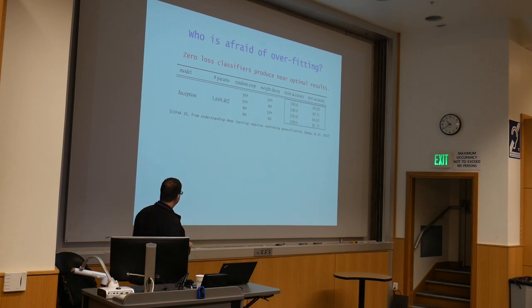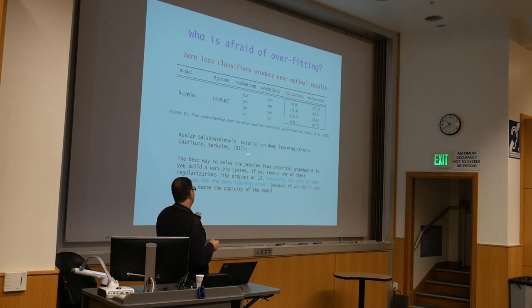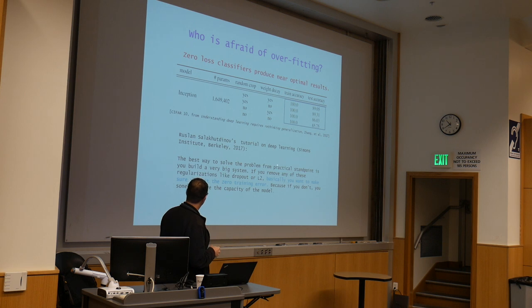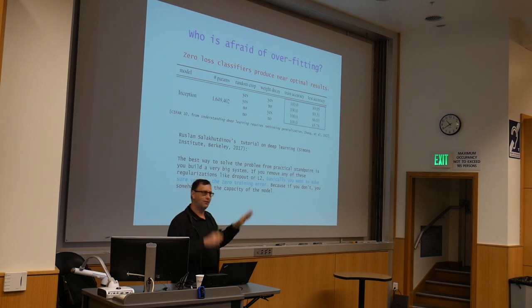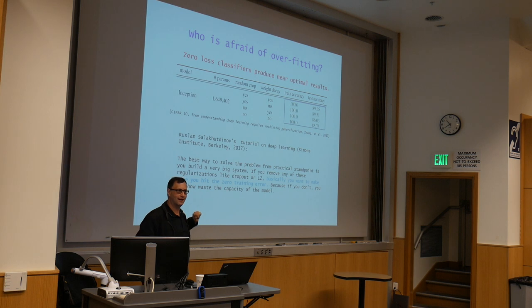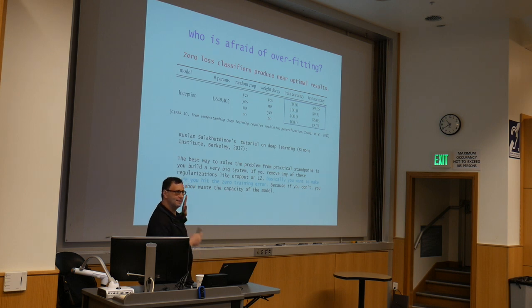You can take a more systematic approach and look at the tutorial on deep learning from Ruslan Salakhutdinov, who gave a tutorial at the Simons Institute last year. He said basically you want to make sure you hit zero training error — that's the first thing you do. You take your huge neural net, hit zero training error, and then maybe tune the parameters a little bit to optimize the test. This somehow doesn't completely square with the previous picture that interpolation was not reasonable.